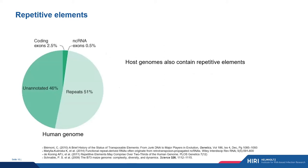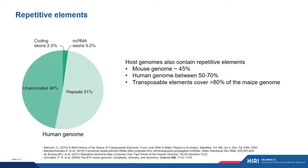Host genomes also contain a lot of repetitive elements, which many people are probably quite aware of. For example, the host genome contains about 45% repetitive elements, the human genome about 50–70%, and in some dual RNA-seq studies looking at different plants, the maize genome has over 80% transposable elements.